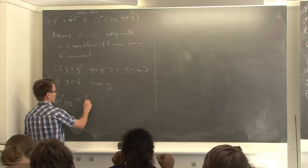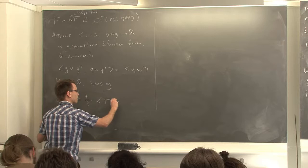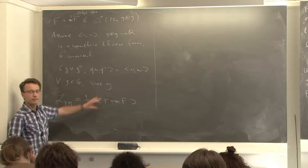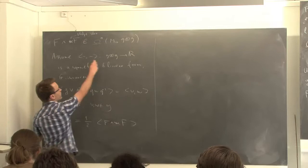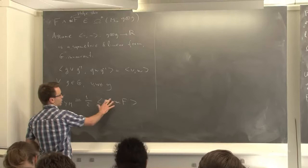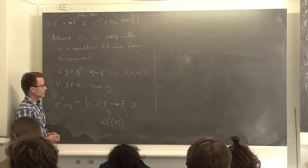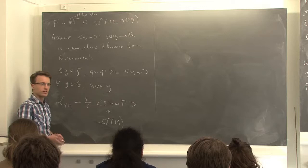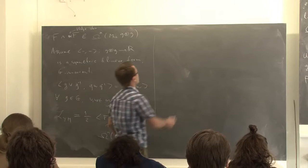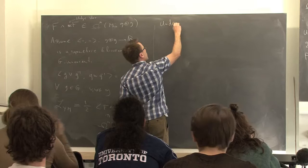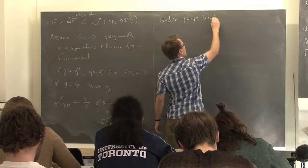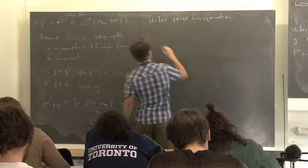I'll put a customary factor of one half and then just pair F with star F and apply the pairing. This was an n-form valued in the tensor product of Lie algebras; applying the pairing gives just an n-form on the manifold. All this discussion is in a local chart, so we need to check that this is indeed invariant under gauge transformations — if we change the trivialization of the bundle this form has to stay the same.